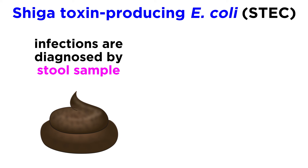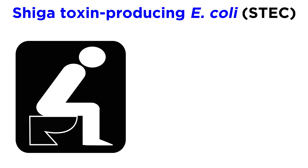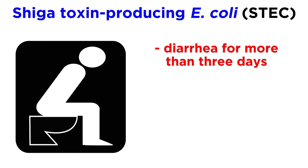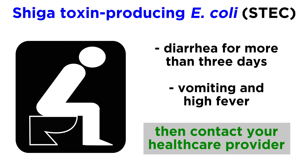For the most part, STEC infections are diagnosed by testing stool specimens in the lab. In the case of big outbreaks, identifying the specific strain of STEC is important so that we can track when and where each strain was found, and where it might be spreading. Public health officials suggest that anyone experiencing diarrhea for more than three days, especially if accompanied by vomiting and high fever, contact their healthcare provider to get checked out.